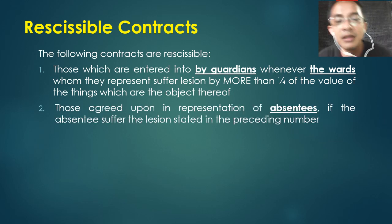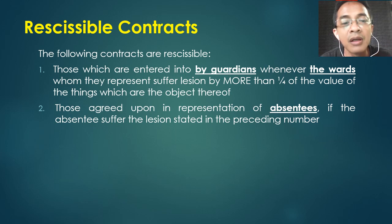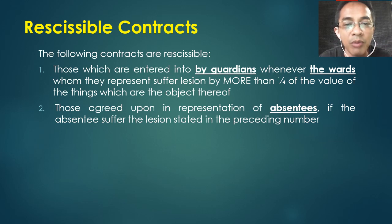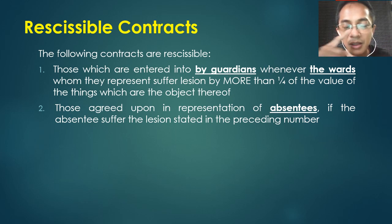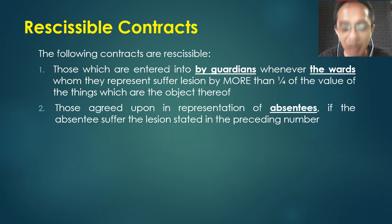Second, those agreed upon in representation of absentees — where the person is absent and cannot be located. A representative acts on their property, and the transaction results in a lesion of more than one-fourth of its value. The contract is valid but rescissible. When the absentee reappears, he can either ratify the contract or go to court and ask for rescission.